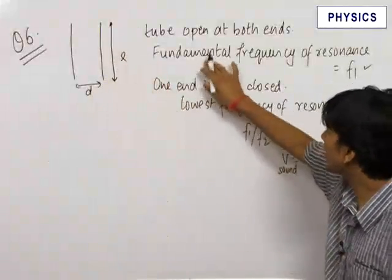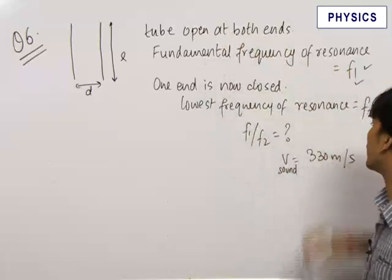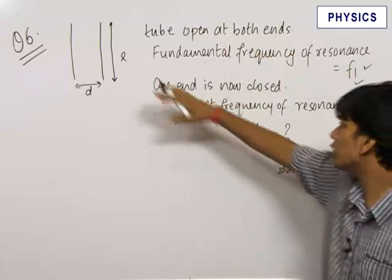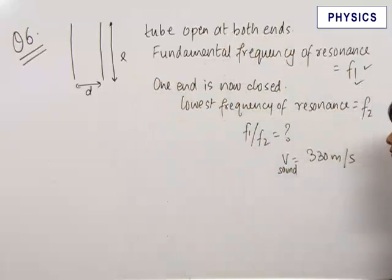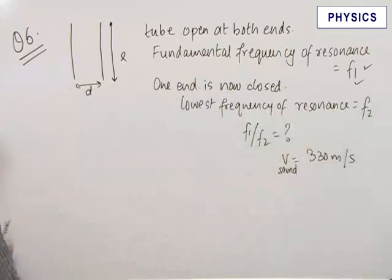It is given that the fundamental frequency of resonance when it is open at both ends is equal to F1. One end is now closed and the lowest frequency of resonance is equal to F2. We need to find the ratio F1 upon F2 when velocity of sound is given.